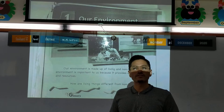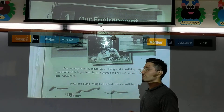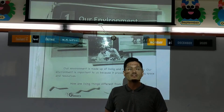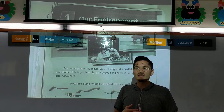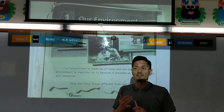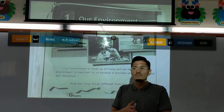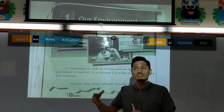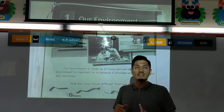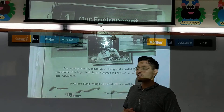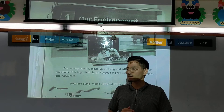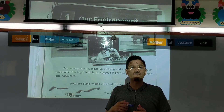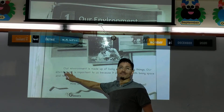What is our environment? Our environment is made up of non-living and living things. Living means something that can move and breathe, like a human or an animal. Plants and trees are also living. Non-living means things that don't breathe or move - a chair, a rock, a pencil, a fan - they're non-living.